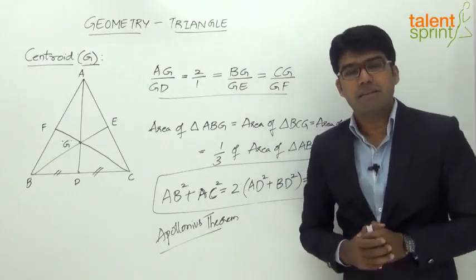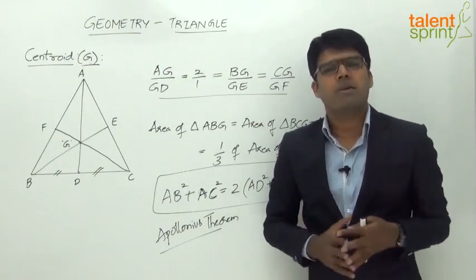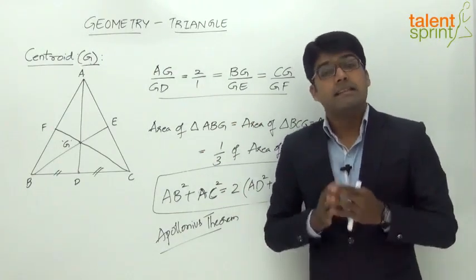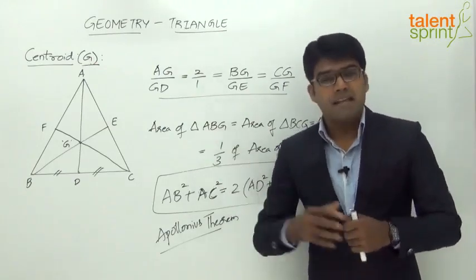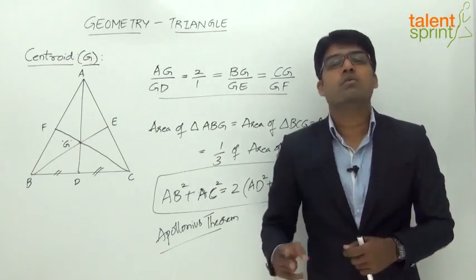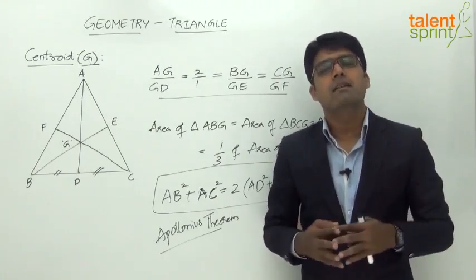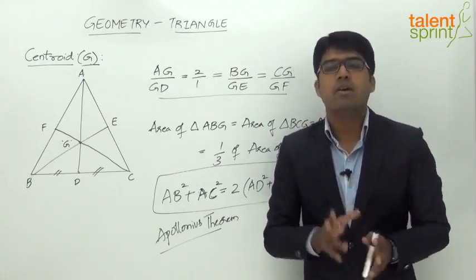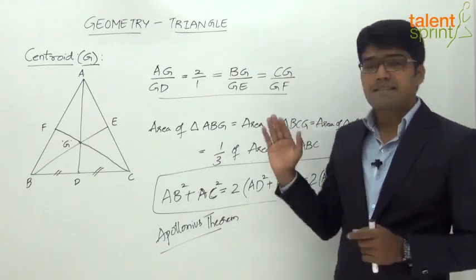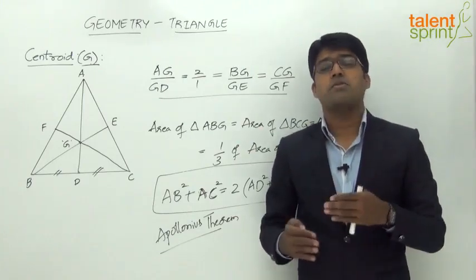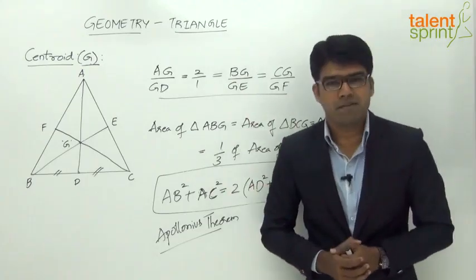The last point regarding medians: if triangle ABC is equilateral, where all three sides and three angles are equal, then all three medians are also equal. If the triangle is isosceles, then only two of the medians will be equal. So in an equilateral triangle the three medians are equal, whereas in an isosceles triangle only two of the medians are equal in length. That covers the first center of a triangle — the centroid — which is the point of intersection of the medians and its key properties.